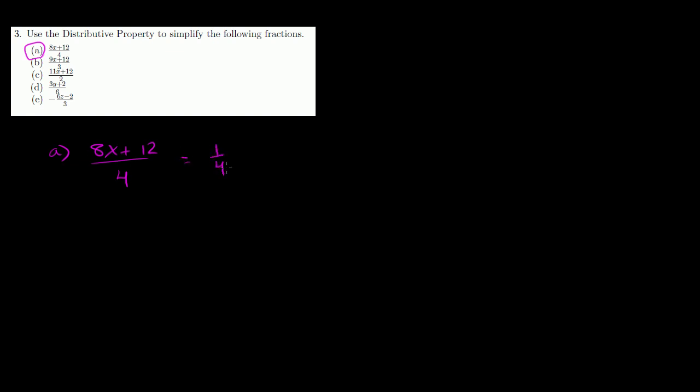You could even view this as, this is the same thing as multiplying 1 fourth times 8x plus 12. These two things are equivalent. Here you're dividing each by 4. Here you're multiplying each by 4. If you did it this way, this is the same thing as 8x over 4 plus 12 over 4. You're kind of doing a adding fractions problem in reverse. And then this is 8 divided by 4 is going to be, this will be 2x plus 3.